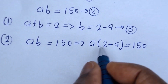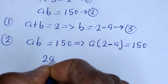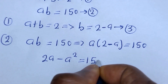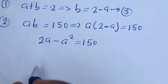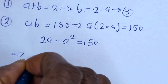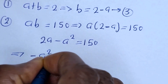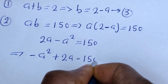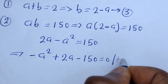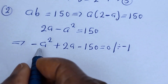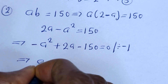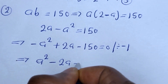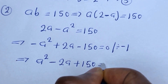Now let's open this bracket. A multiplied by 2 is 2A, minus A multiplied by A — A squared — is equal to 150. This can be written as minus A squared plus 2A minus 150 is equal to 0. Let's divide through by minus 1, then we have A squared minus 2A plus 150 is equal to 0.